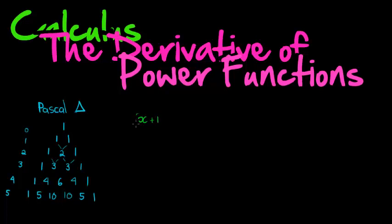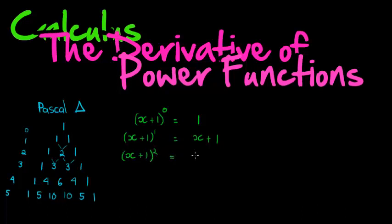Imagine we have (x+1) to the power of 0. Anything to the power of 0, except 0 to the power of 0, is equal to 1. To the power of 1, (x+1)^1 = x+1. And (x+1)^2 = x² + 2x + 1. Have a look at the coefficients: for power 0 we have 1; for power 1 we have 1 and 1; for power 2 we have 1, 2, 1.